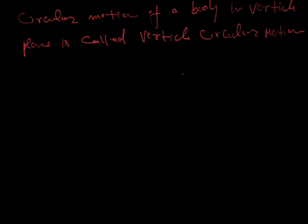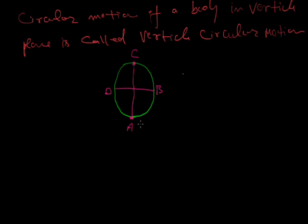In this motion, when the body goes from the lowest point A to the highest point C, with B and D at the middle level, the body works against gravity from A to C, so its velocity continuously decreases up to C. From C back to A, the velocity increases again. According to the velocity, the tension in the string also decreases up to point C and increases again up to A.